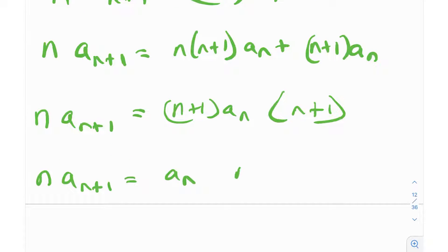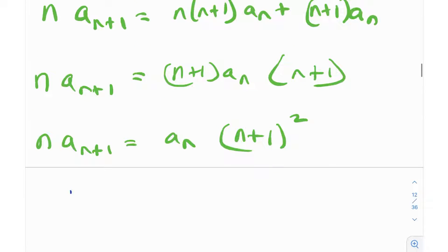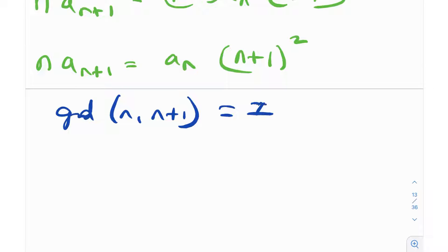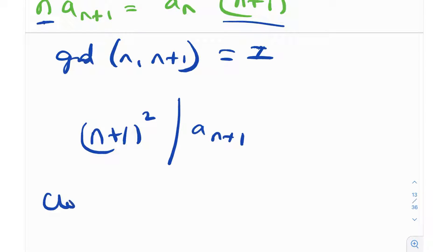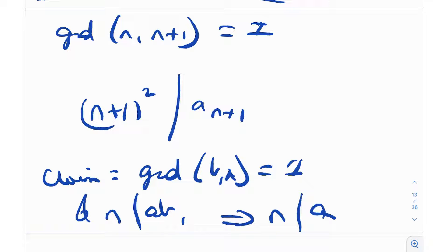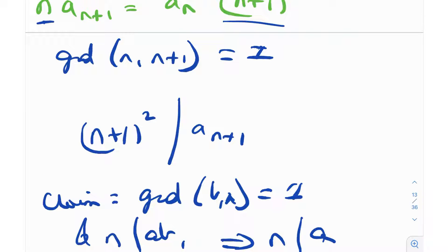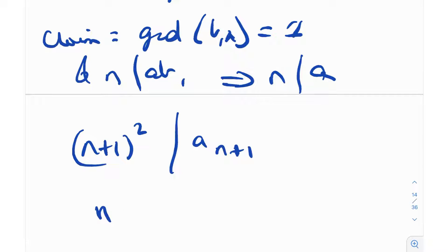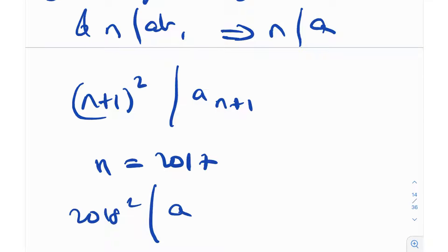Now the gcd of n and (n+1) is actually one, so obviously the gcd of n and (n+1)² will also be one. That means these both quantities don't divide one another, so (n+1)² needs to divide aₙ₊₁. This was essentially the claim we made earlier: if gcd(b, n) = 1 and n divides ab, then n divides a. So (n+1)² has to divide aₙ₊₁. After this we just put n = 2017, so we get 2018² divides a₂₀₁₈, which is what we had to prove.